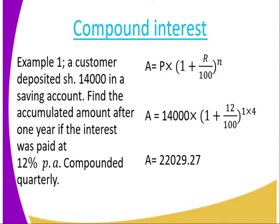Example 1: A customer deposited $14,000 in a savings account. Find the accumulated amount after one year if the interest was paid at 12% per annum, compounded quarterly. Since it is compounded quarterly, the rate per period is 12 ÷ 4 = 3%, and the time is 1 × 4 = 4 periods. Applying the formula, A = P × (1 + r/100)^t, you get $22,029.27.